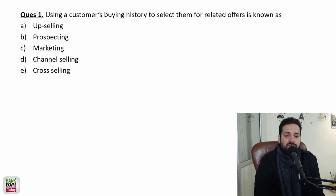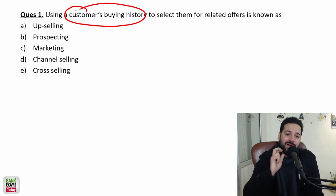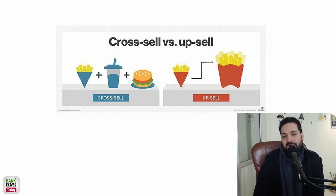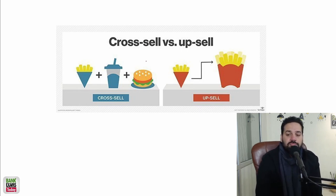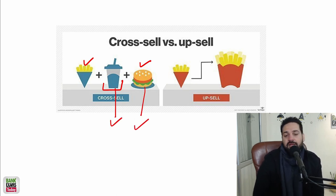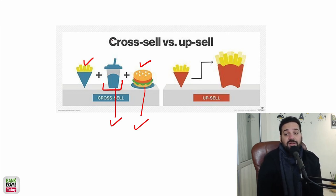Let's start with the questions. Using a customer's buying history to select them for a related offer is known as cross-selling. When you go to McDonald's and make an order for a burger and fries, they will ask you, 'Would you like some coke?' Or if you're buying a Maharaja Mac, they'll ask, 'Would you like some fries?' That is cross-selling.